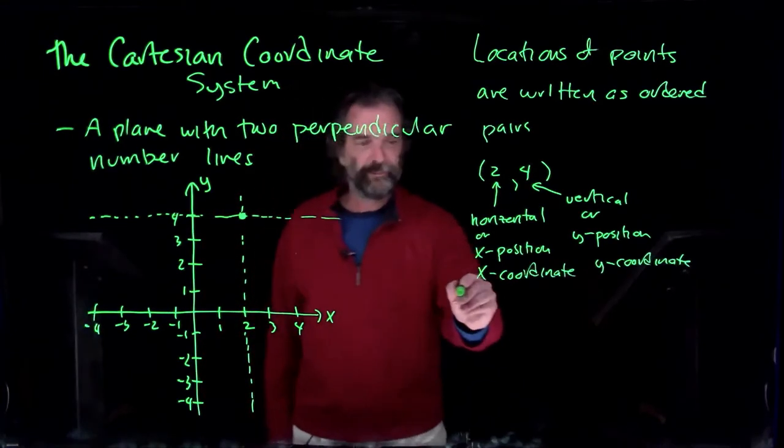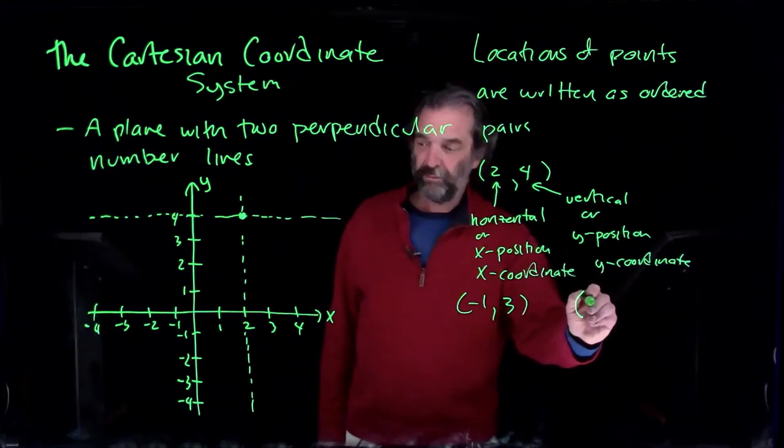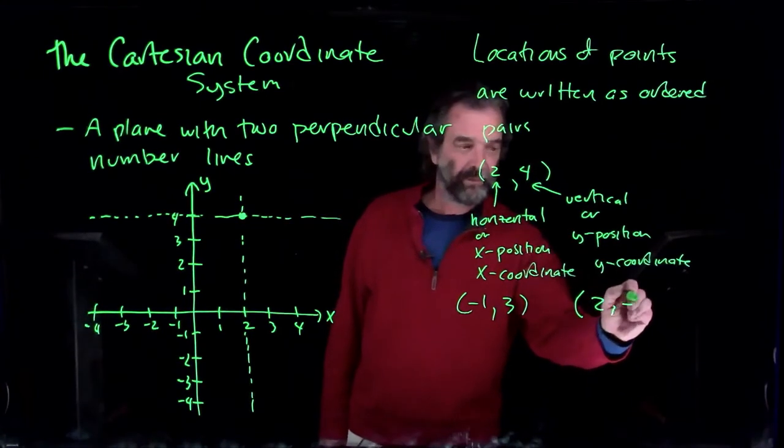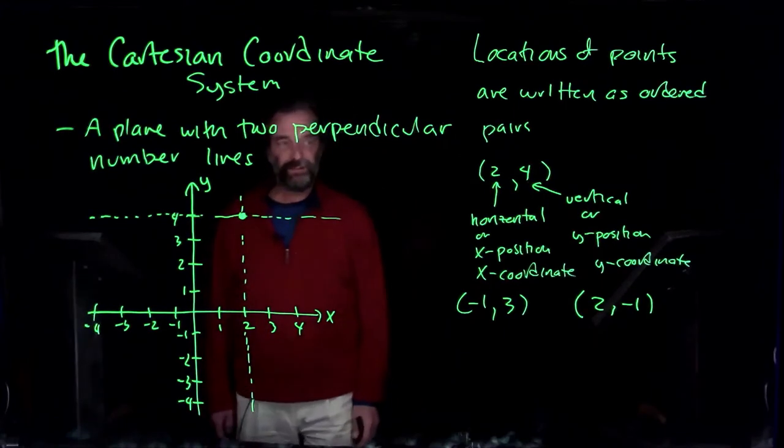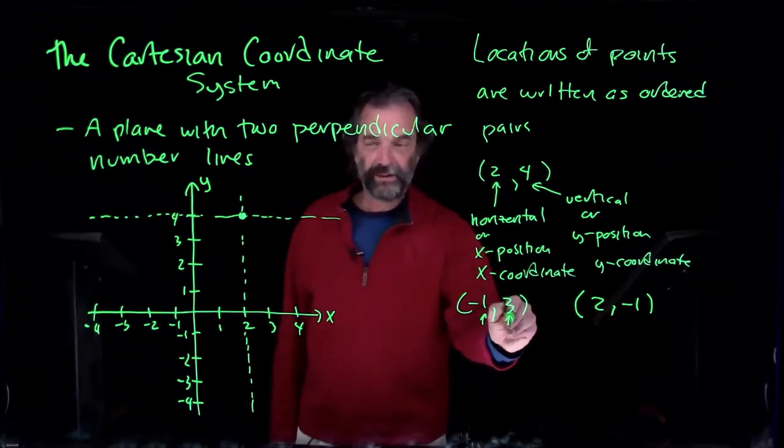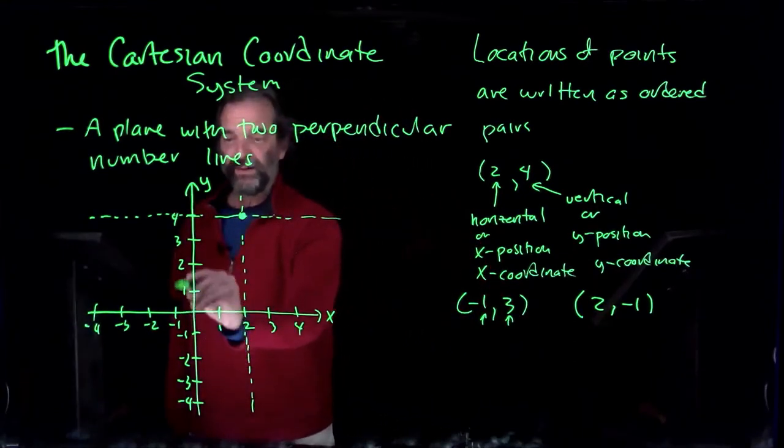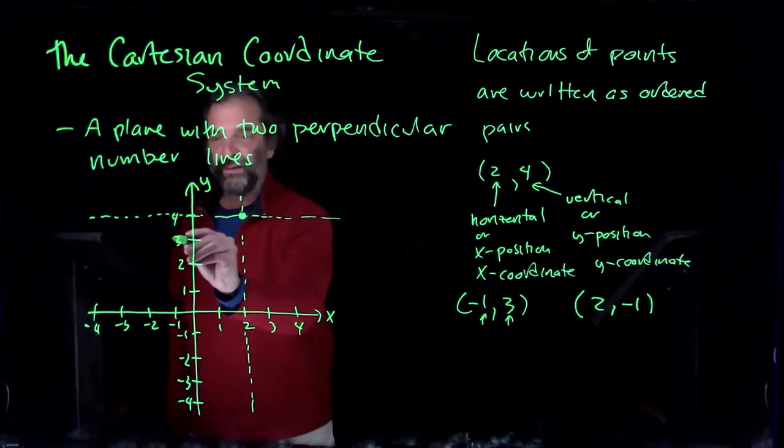We can try some other ones. Where will these guys end up? This says that x is minus one and y is three. X is minus one is here, y is three is there.